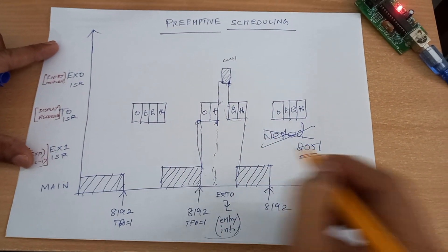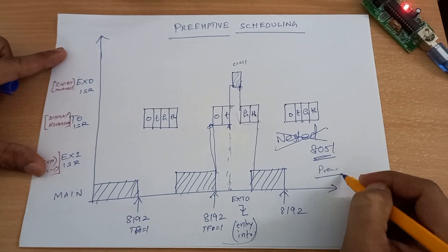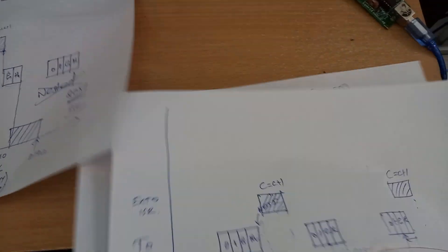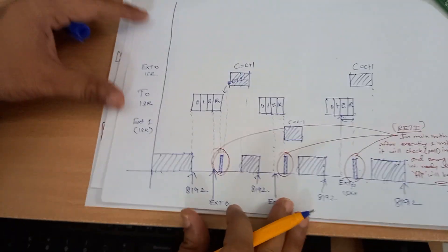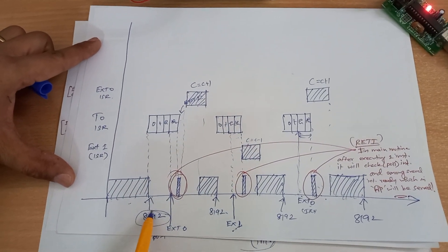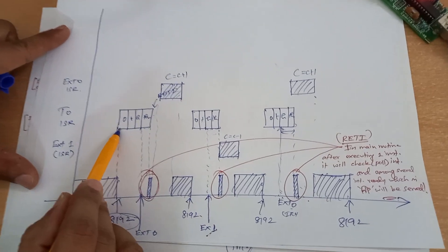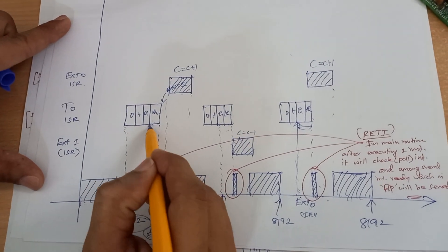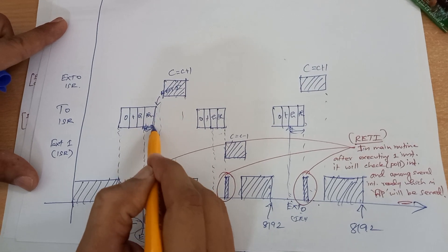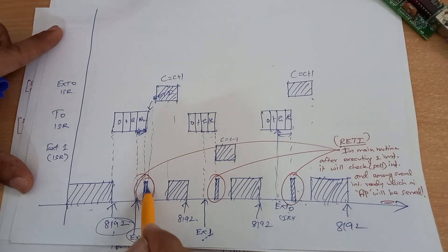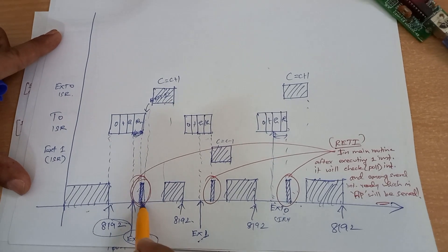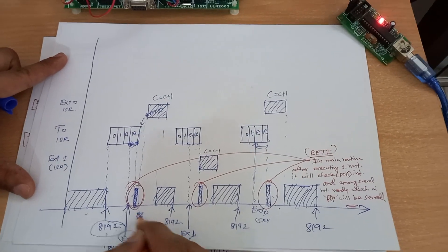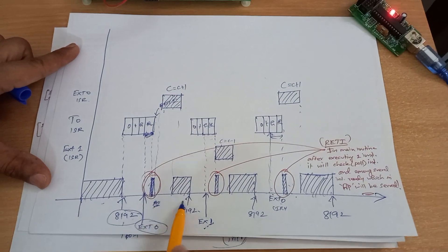What actually happens in AT51: the main routine is running, and at every 8,092 microseconds, the timer overflows and it goes to the timer 0 ISR. While executing the timer 0 ISR, even though external interrupt 0 comes, it waits until timer 0 returns from the ISR. Timer 0 comes back to the main routine, executes one instruction, then polls for interrupts. It identifies external interrupt 0 is ready, goes to the external interrupt 0 ISR, increments, and comes back. It continues the main routine.